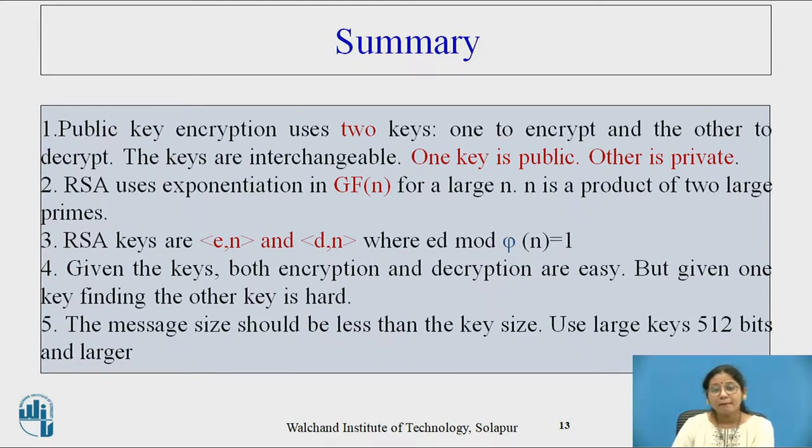RSA public key encryption uses two keys, one to encrypt and the other to decrypt. The keys are interchangeable. We cannot interchange between public and private key. For example, at one time d is public key, at another time d is private key. This is not the case with RSA. The keys are interchangeable. One key is public and other is private.